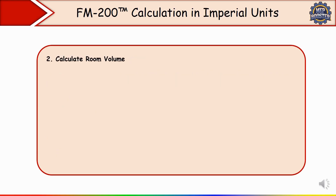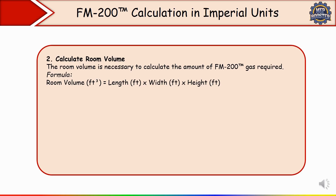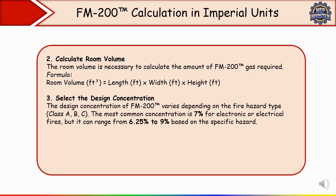The second step is to calculate the room volume. The room volume is necessary to calculate the amount of FM 200 gas required. The formula to find the room volume in cubic feet is: Length × Width × Height.